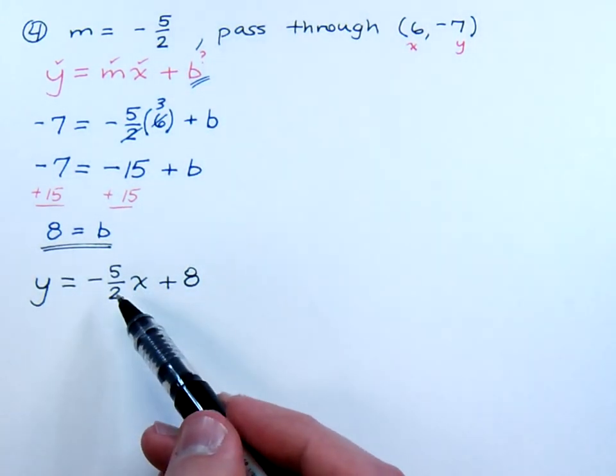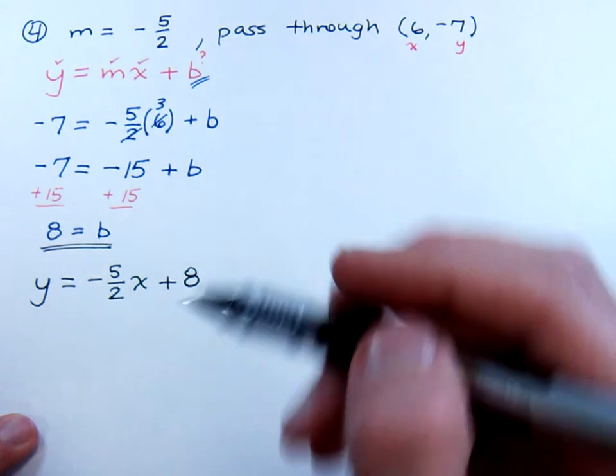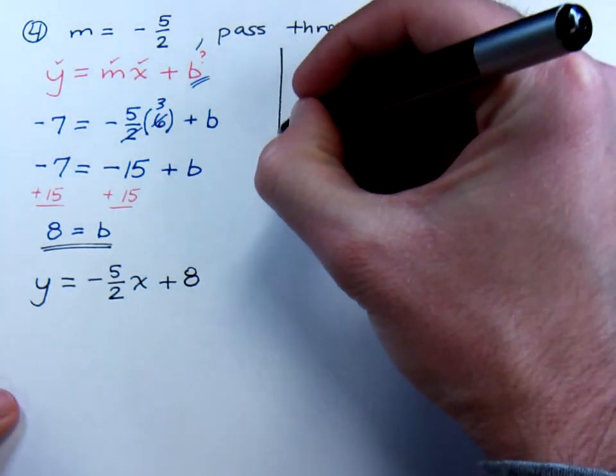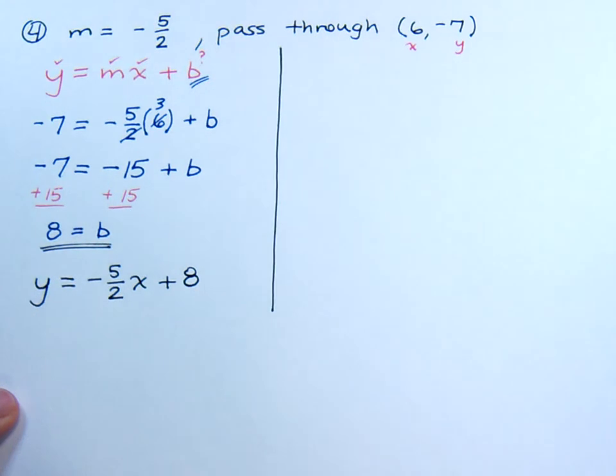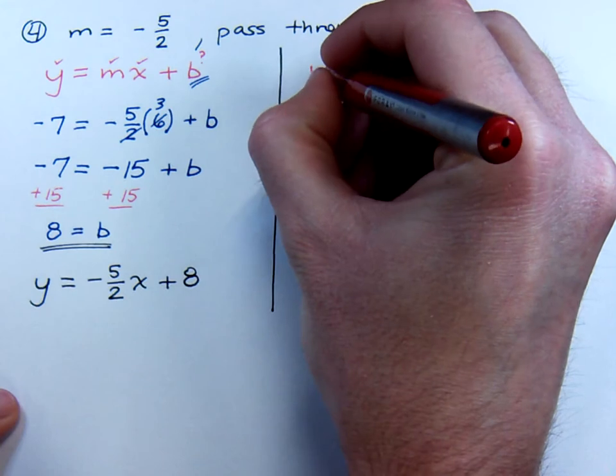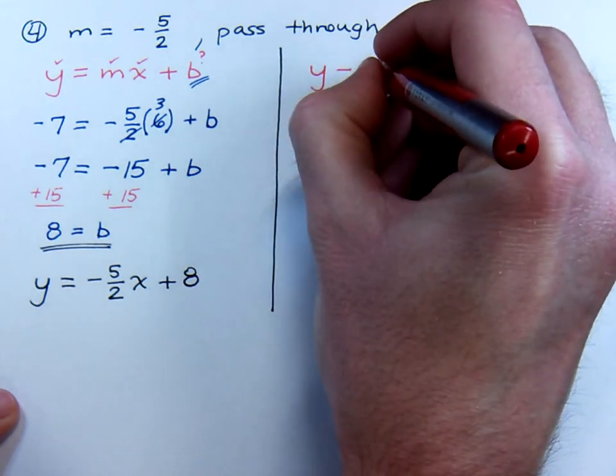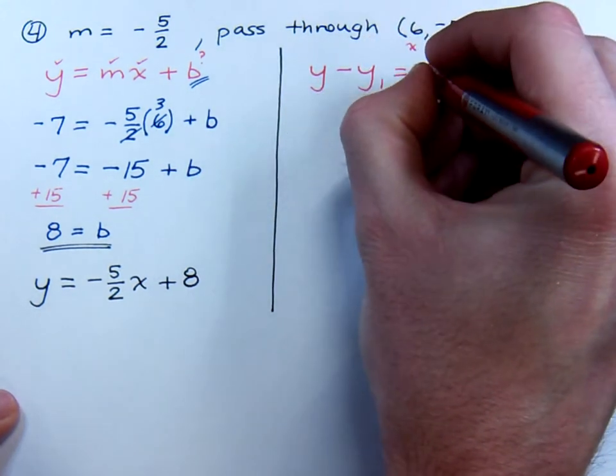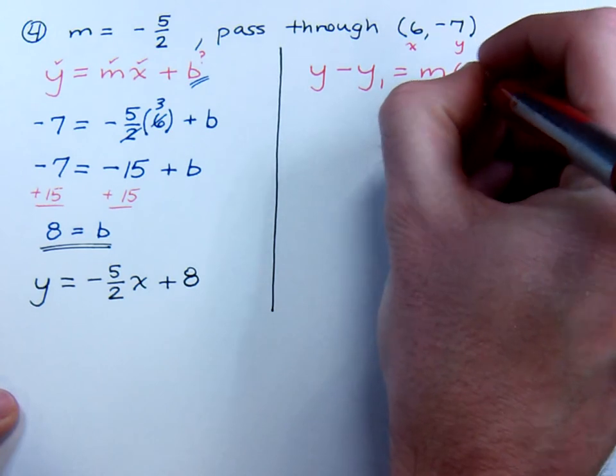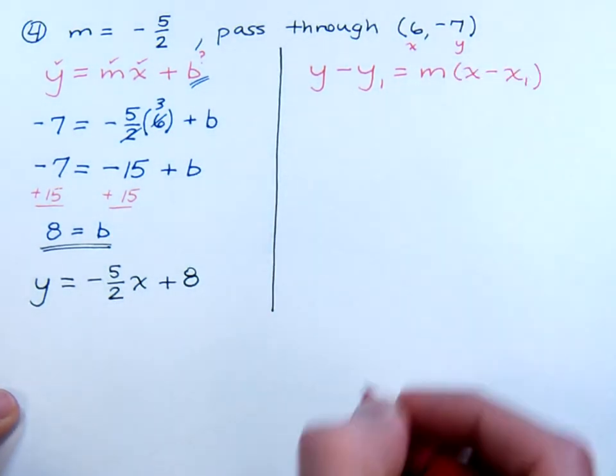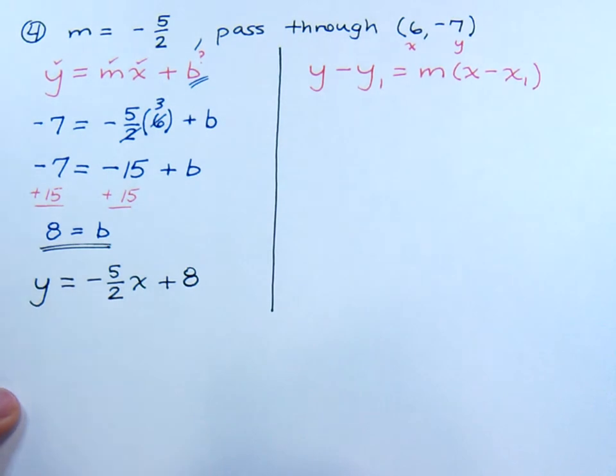Plug in the 6 and you're going to come up with negative 7. Now that's just one way of working this problem. Remember, the other way that we saw at the end of the last video was to use the point-slope formula. Now really, it doesn't really matter which formula you use, you should still get the same answer no matter what.